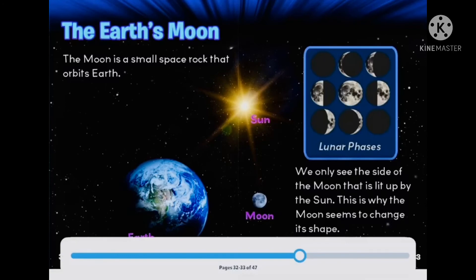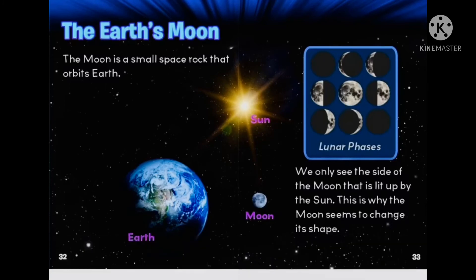The Earth's moon. The moon is a small space rock that orbits Earth. We only see the side of the moon that is lit up by the sun. This is why the moon seems to change its shape.